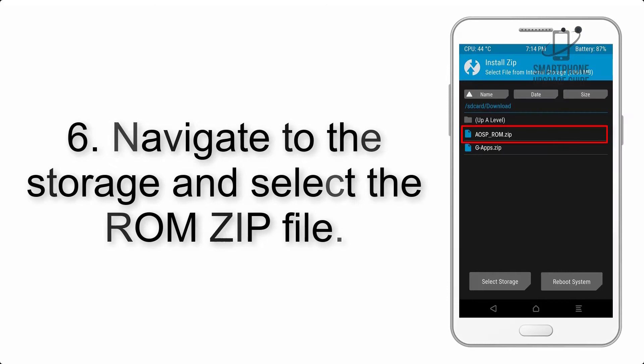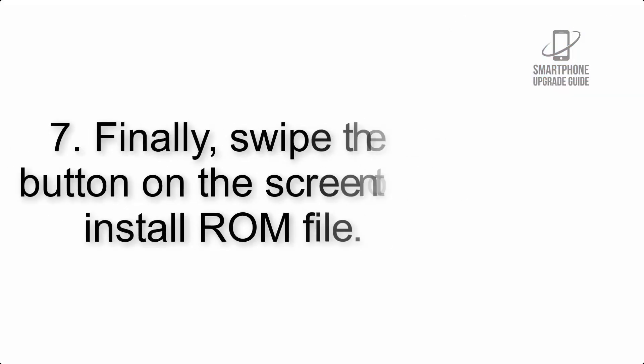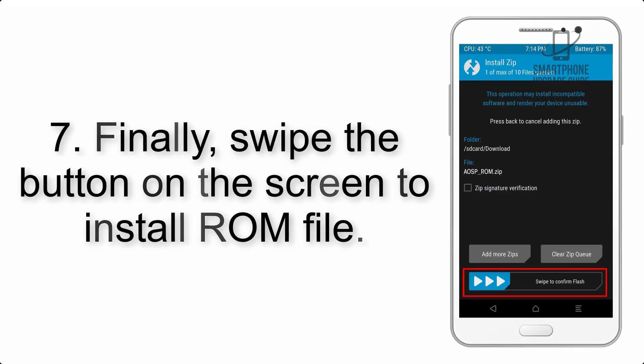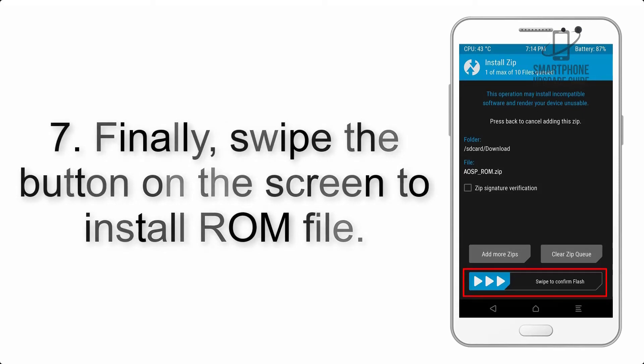Step 5: go back to the recovery main screen and tap on the Install button. Step 6: navigate to the storage and select the ROM zip file. Step 7: swipe the button on the screen to install the ROM file.